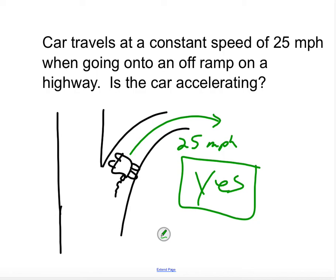It is traveling at a constant speed. But acceleration is a change in velocity, which is speed and direction. So you can have a constant speed and change direction. And as soon as you change direction, you're changing velocity. If you change velocity, you have acceleration taking place. So even though it's a constant speed, you actually have acceleration taking place.